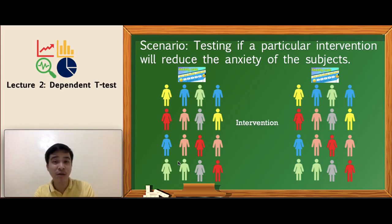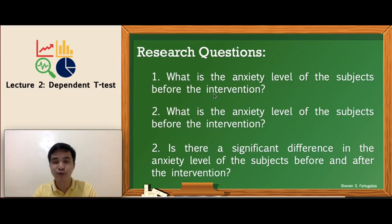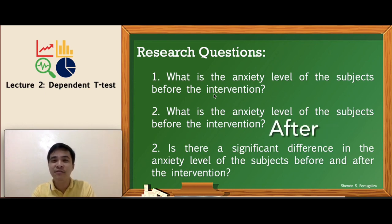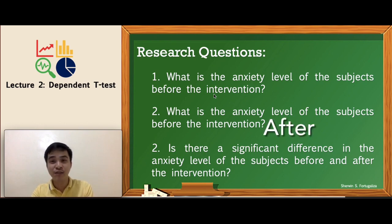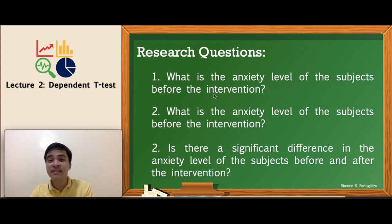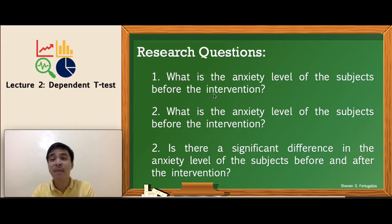If we are going to phrase our research questions for this type of research project, the sequence would be: number one, what is the level of their anxiety before? Number two, what is the level of their anxiety after you introduce the intervention? Number three, is the difference in the anxiety level of the participants before and after significant? Questions one and two are descriptive, and question three is inferential — this is where the t-test for dependent samples is appropriate. For questions one and two, mean and standard deviation are applicable; for question three, you use the dependent t-test.